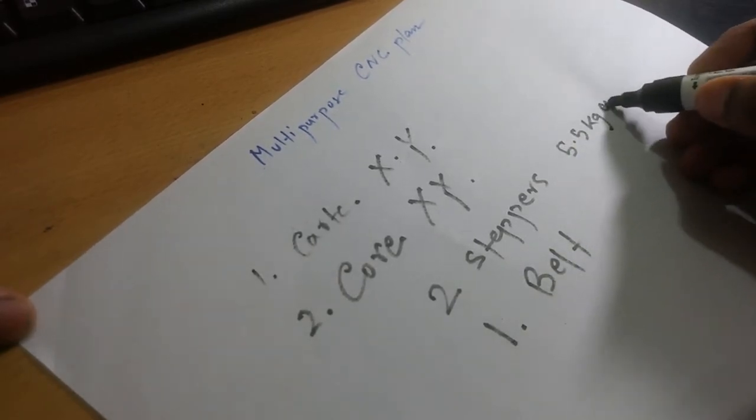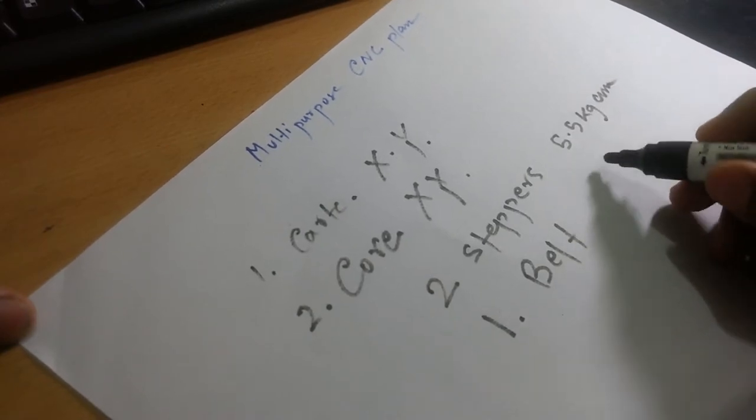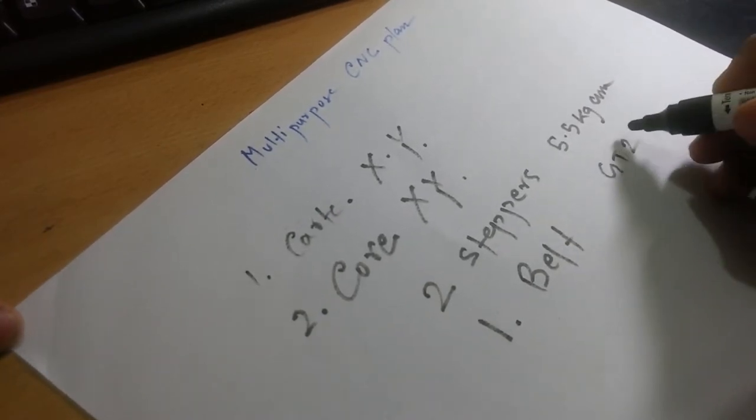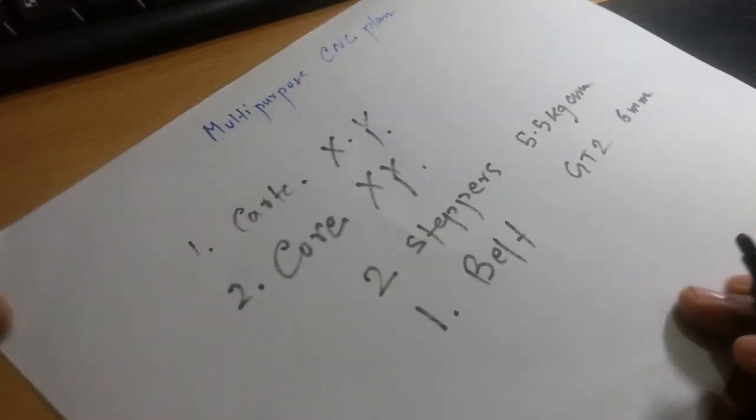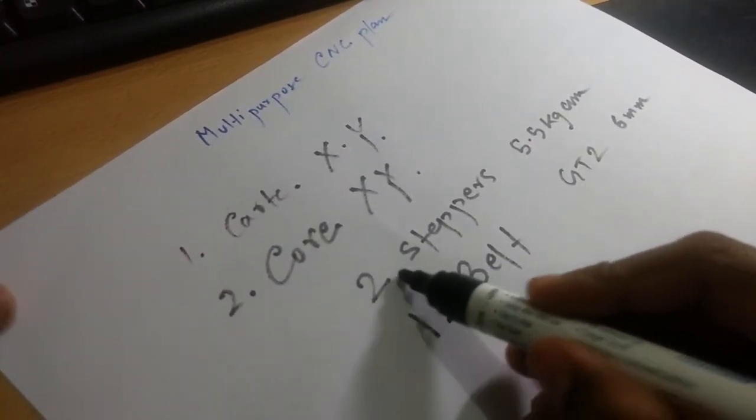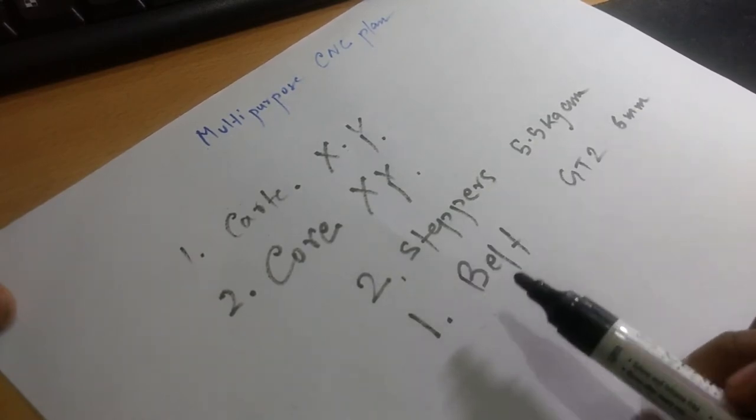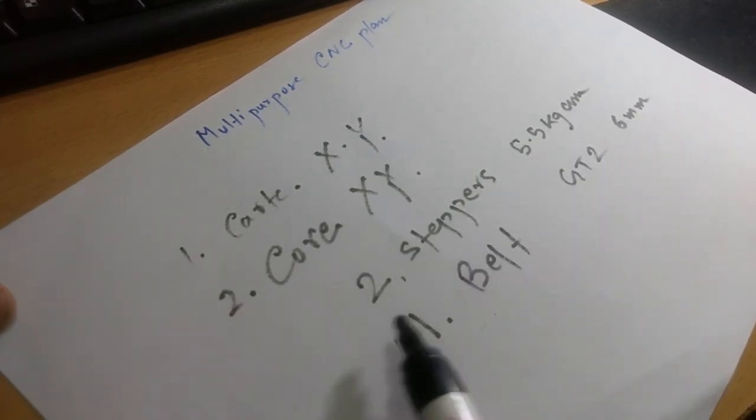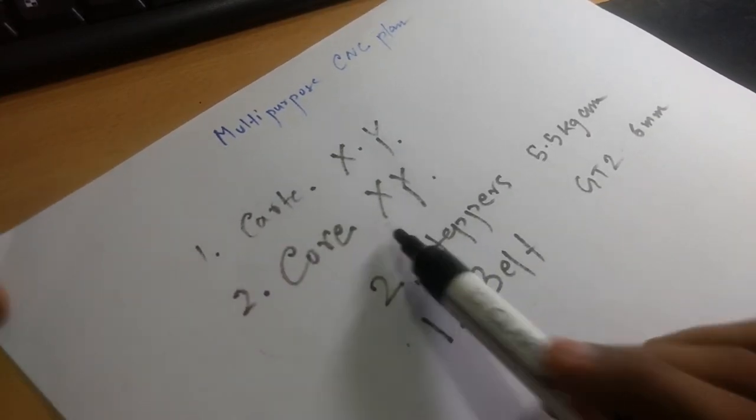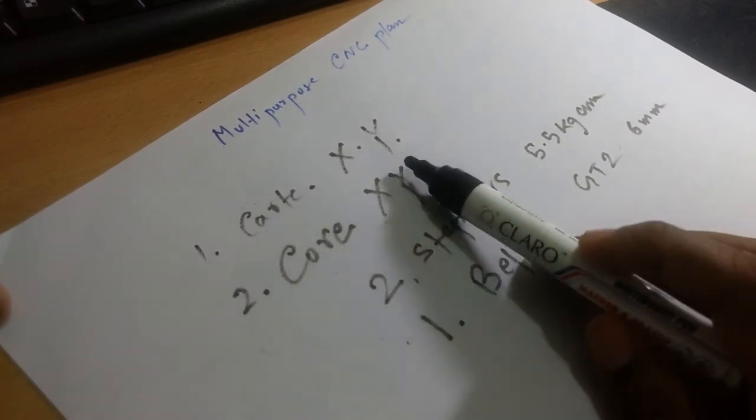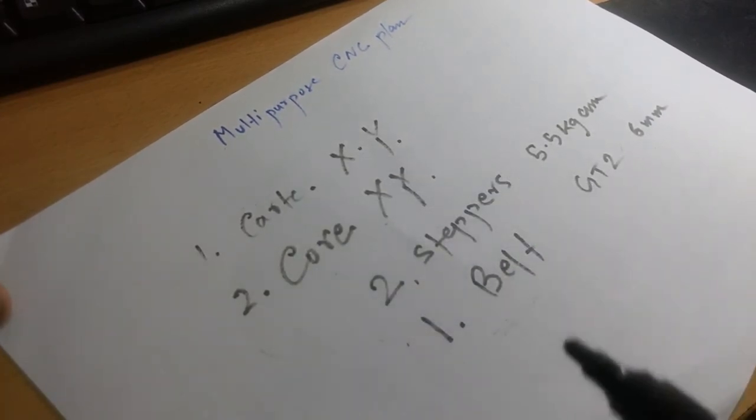These will differentiate my CNC with the Cartesian XY, because in Code XY a single belt is used, whereas in Cartesian XY two separate belts are used for X and Y axis. In Code XY, a single belt is used for the whole X as well as Y axis.